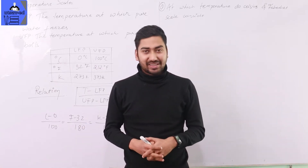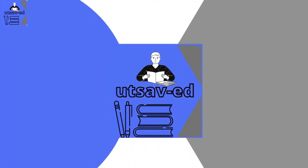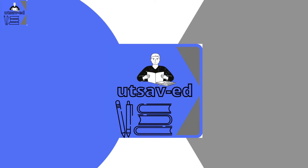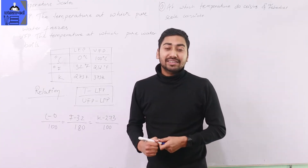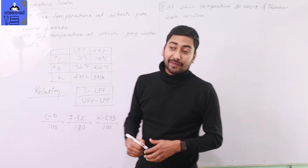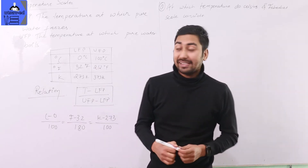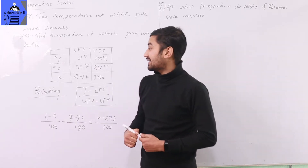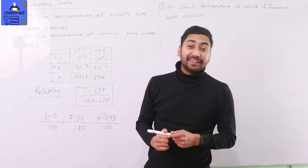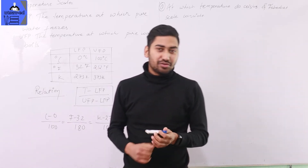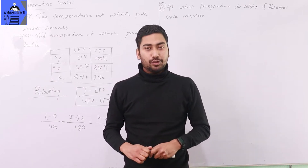Let's begin with today's class. Temperature scales — different scales used in different regions. The SI system scale is Kelvin. I generally use centigrade or Celsius, and in the Western region we use Fahrenheit.